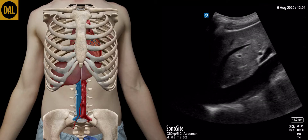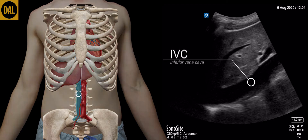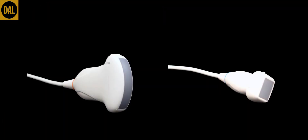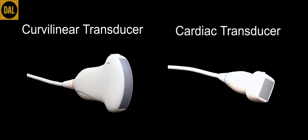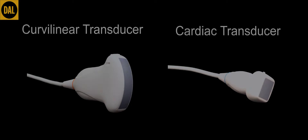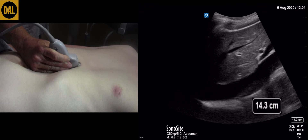In this video we will be doing a scan of the inferior vena cava. For this scan we will be using the low frequency curvilinear transducer. Alternatively, the cardiac phased array transducer can also be used. The initial depth should be set appropriate to patient body habitus. Larger patients will require maximum depth. In this case we are using a depth of 14 centimeters.